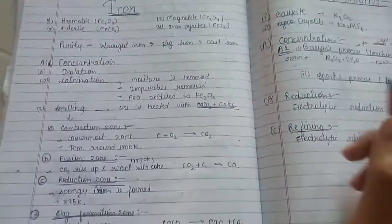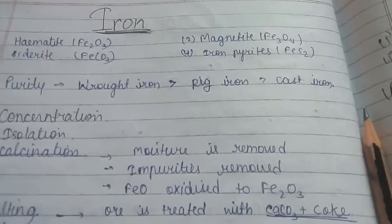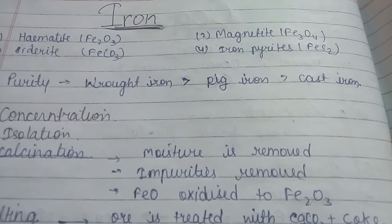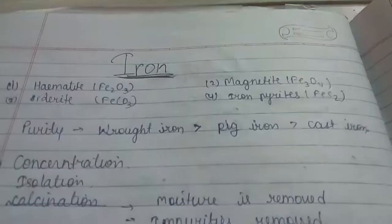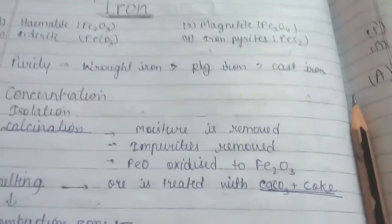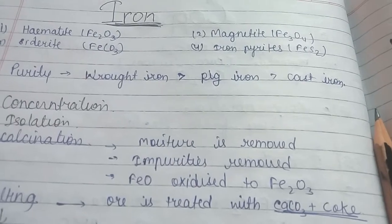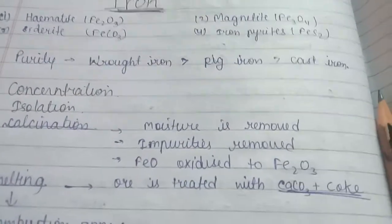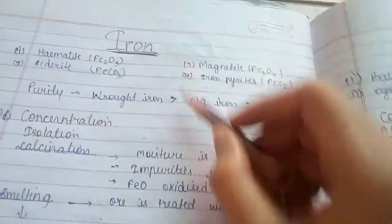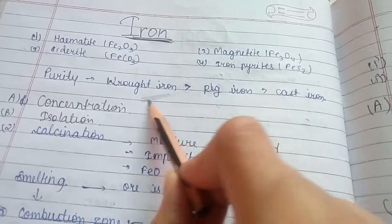Our next metal is iron. Different ores of iron include hematite, magnetite, siderite, and iron pyrites — these are the four important ores of iron listed in NCERT. There are three types of iron: wrought iron, pig iron, and cast iron. The purity of wrought iron is the greatest, followed by pig iron, then cast iron. As purity decreases, carbon content increases.